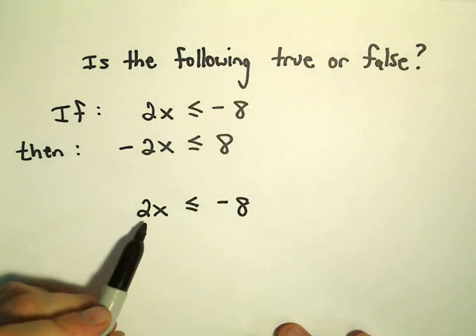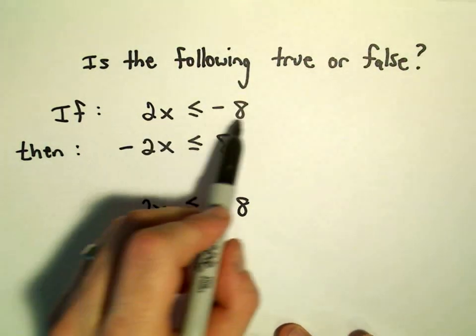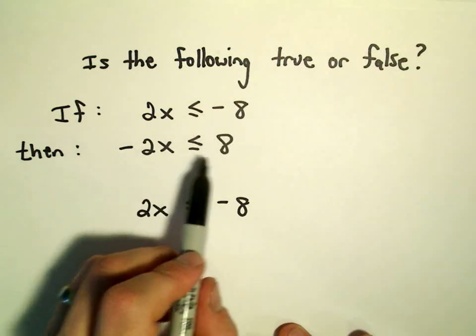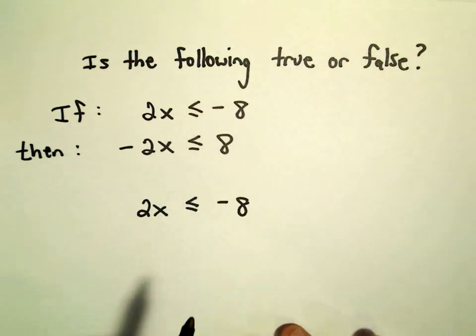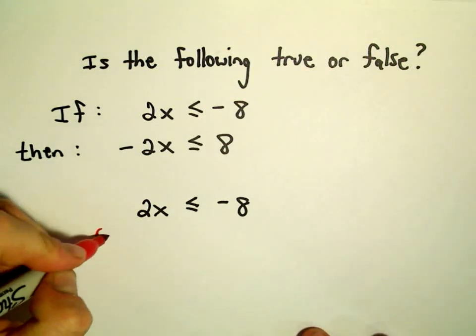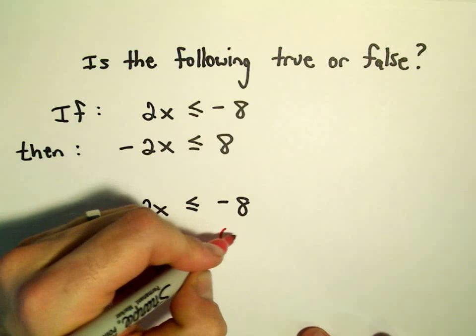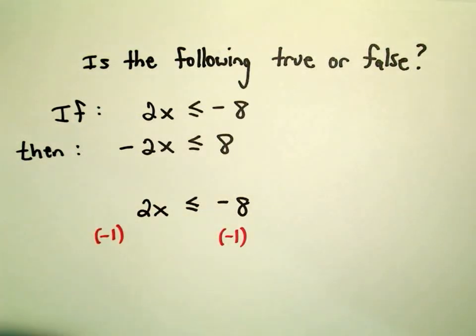How did we go from the first inequality to the second inequality? Well, to me it looks like we multiplied both sides by -1. So I'm going to multiply the right side by -1 as well.